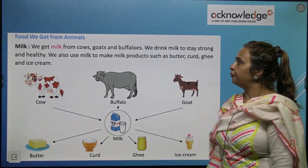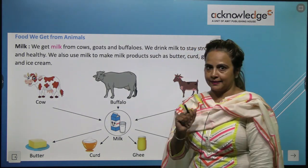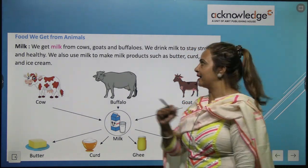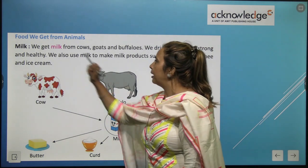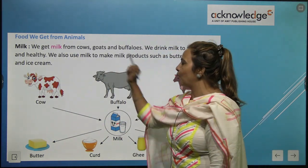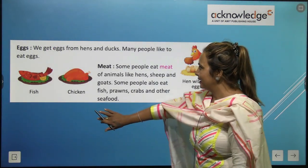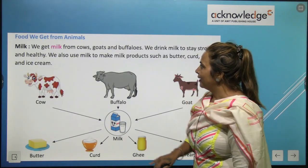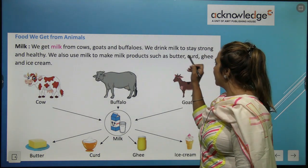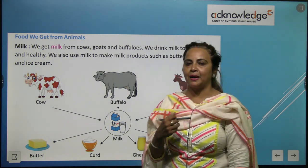Food we get from animals — milk. We get milk from cows, goats, and buffaloes. We drink milk to stay strong and healthy.